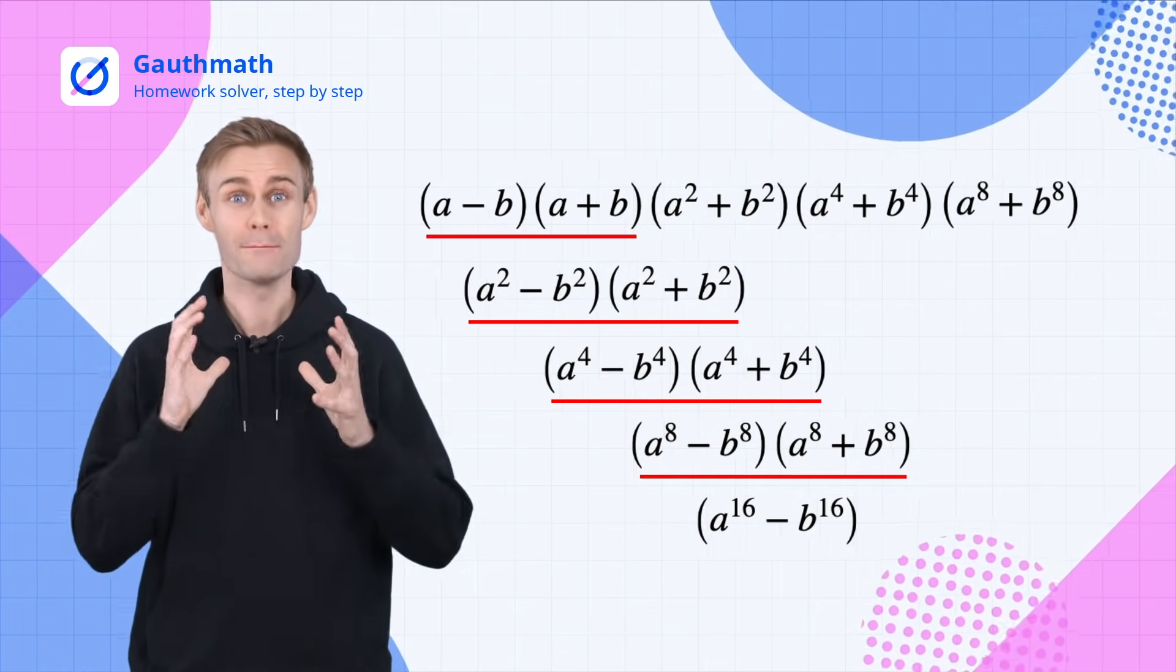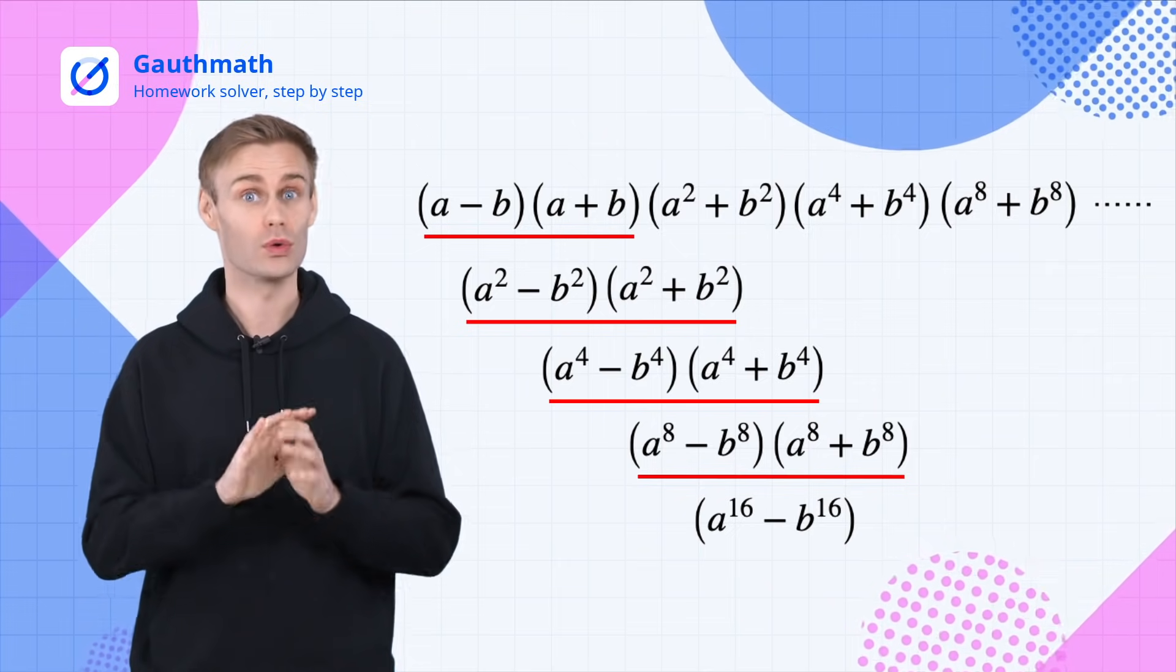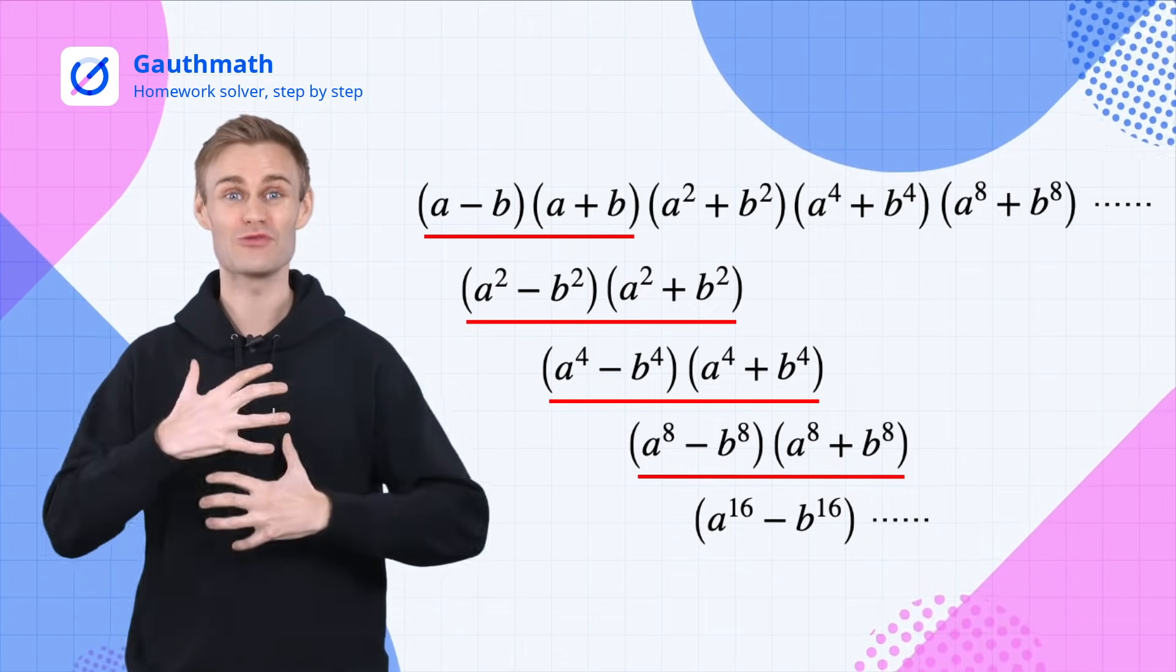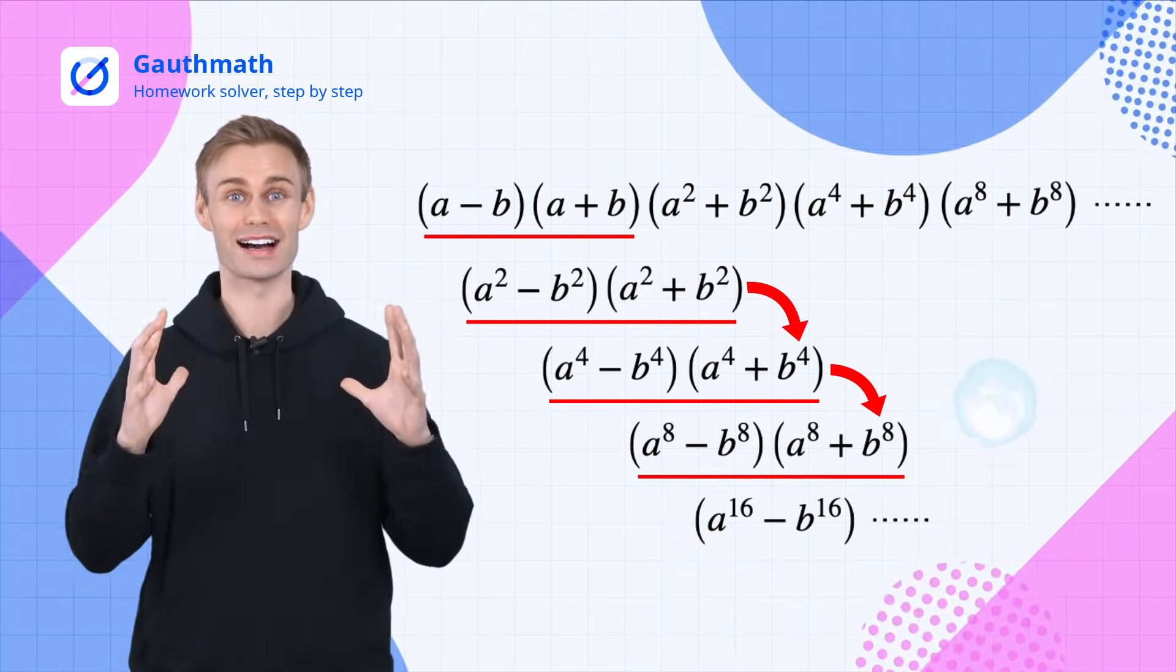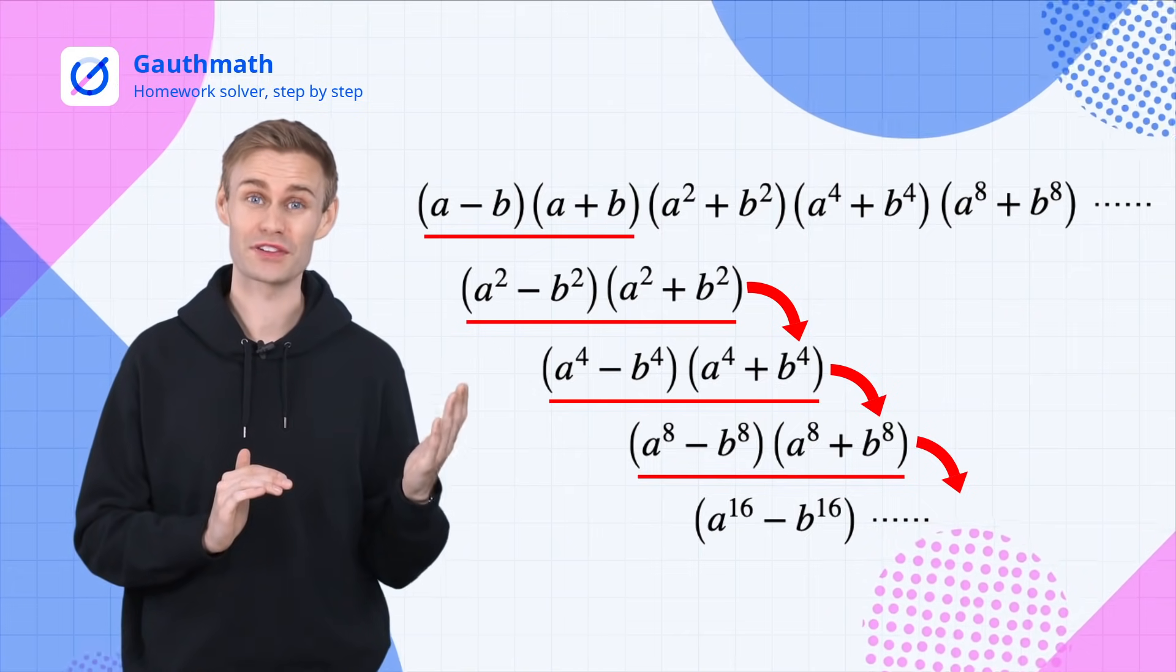Now you could put even more factors into the expression and find that this method always applies. Only the exponents of A and B like a rolling snowball become bigger and bigger. This is the snowball effect on the difference of two squares.